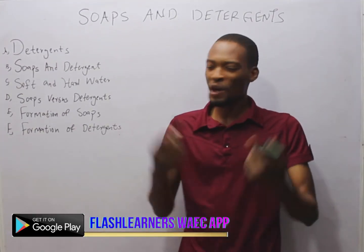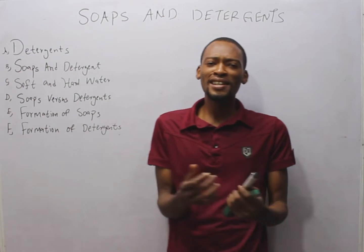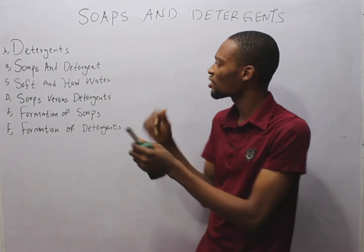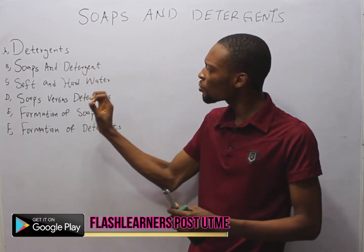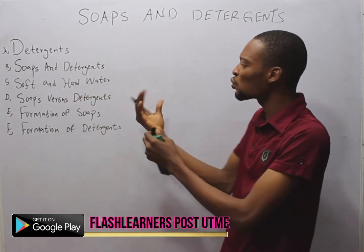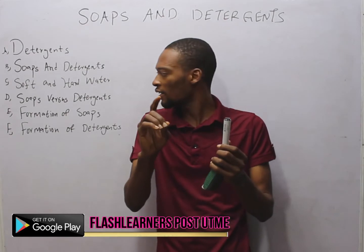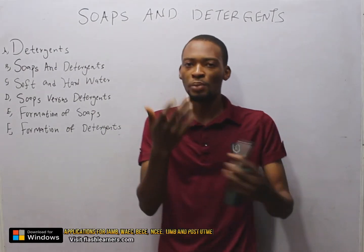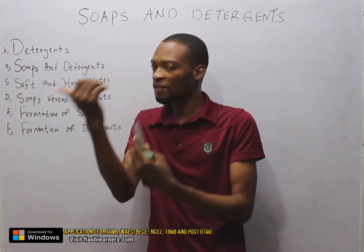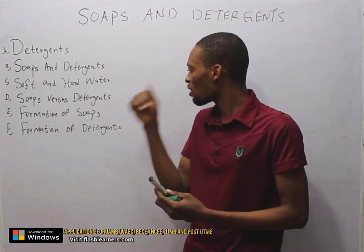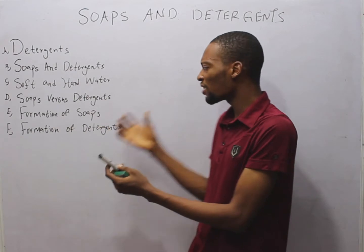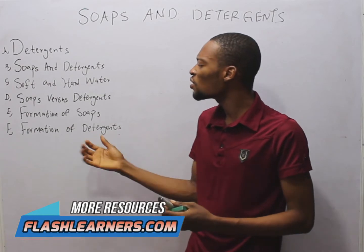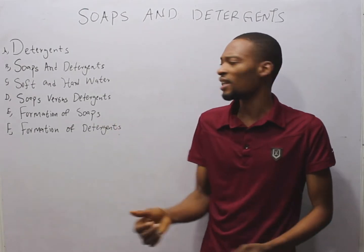Hello, you are welcome to chemistry class with Flash Isaac. Today we shall be doing justice to soaps and detergents. In this class, we shall cover detergents, soaps and detergents, soft and hard water — which is hardness in water — soaps vs. detergents, similarities between soaps and detergents, advantages and disadvantages, formation of soaps, the chemical reaction which leads to the formation of soaps, and formation of detergents as well. After that, we shall summarize.